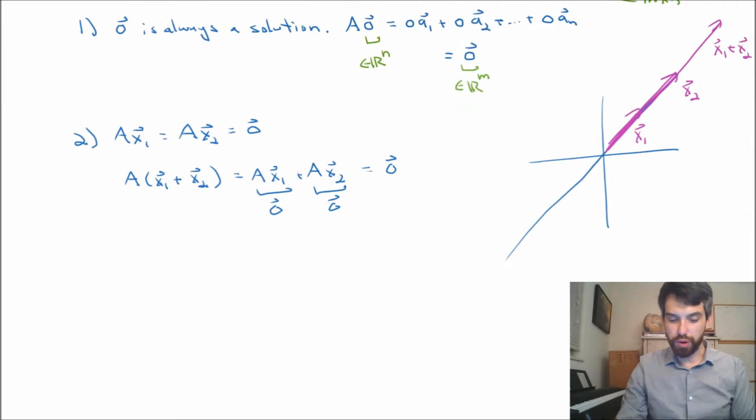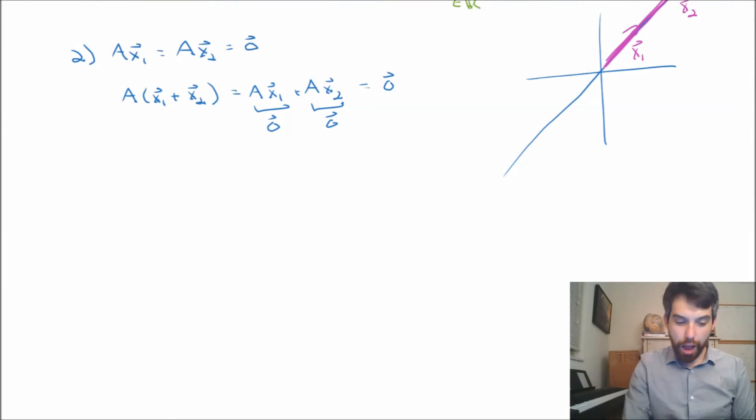Third property that we're going to look at. I want to imagine that I have some particular solution. In other words, an Ax and I call it p, and this solves not the homogeneous but the inhomogeneous now. It solves an Ax = b. Now, I want to also suppose that I have some other solution, which I'm not going to give a little subscript to. It's just going to be some x, where Ax = b as well. It's some other solution to the particular.